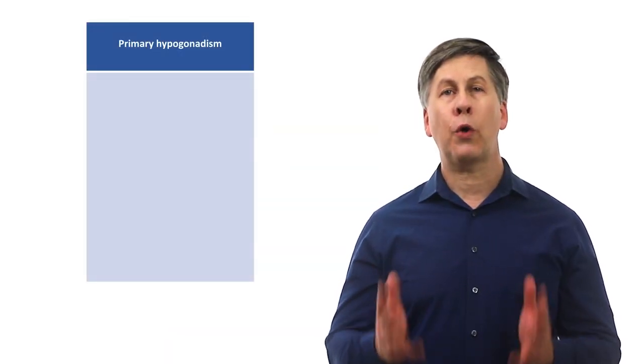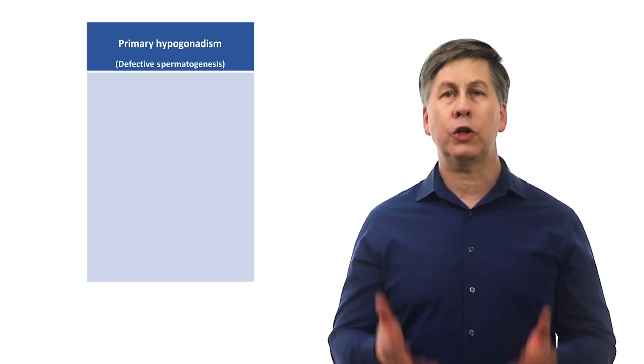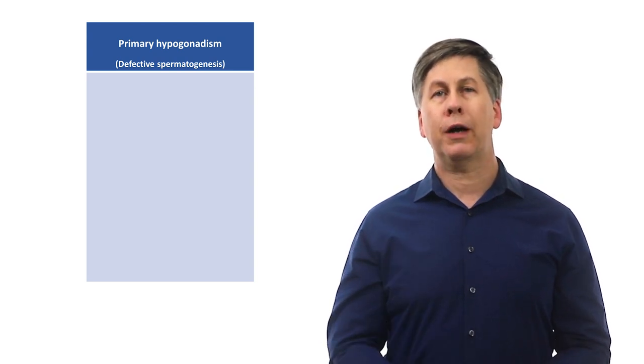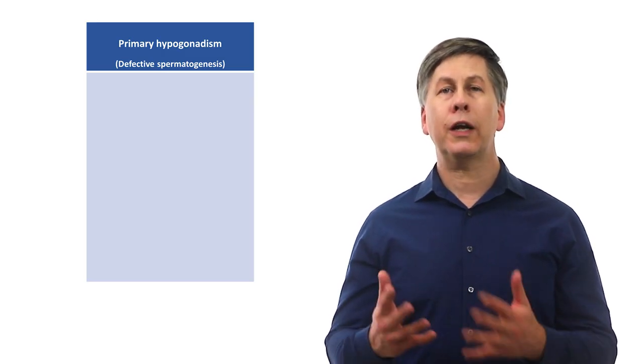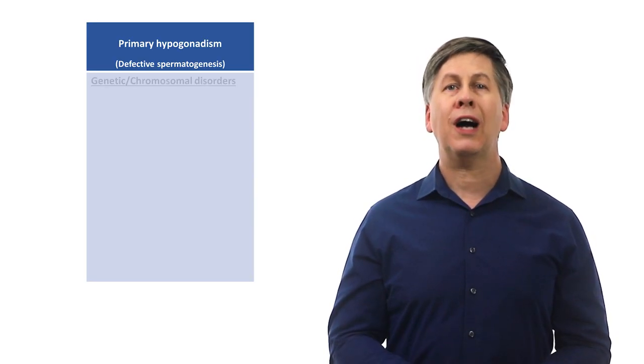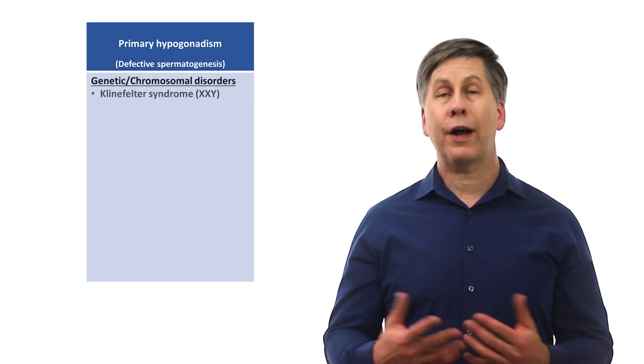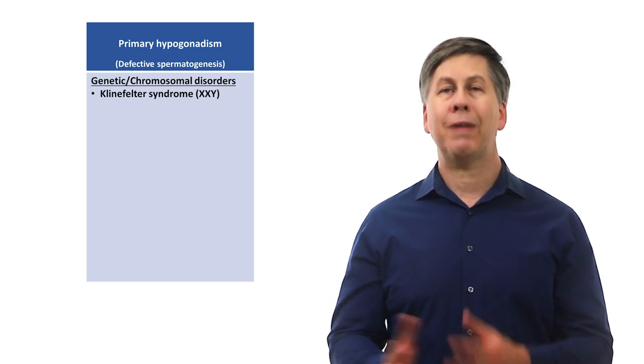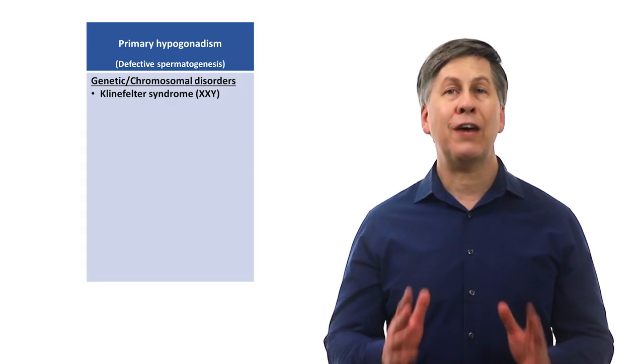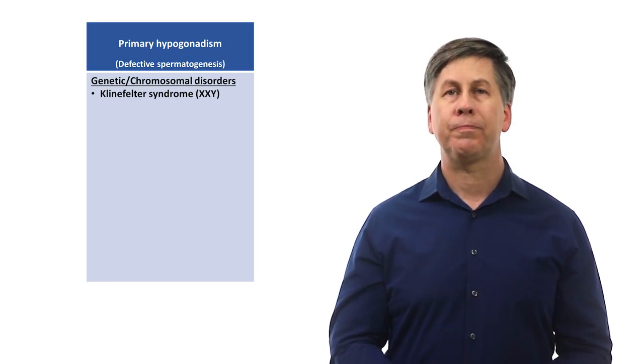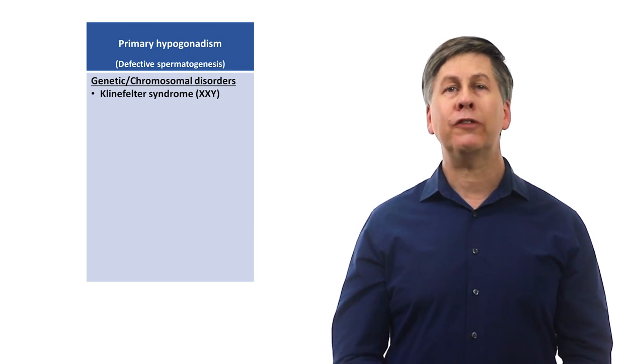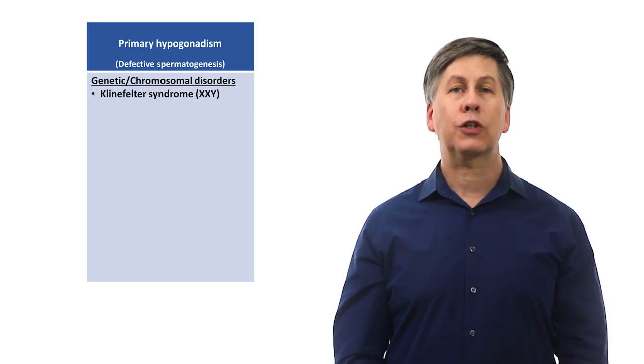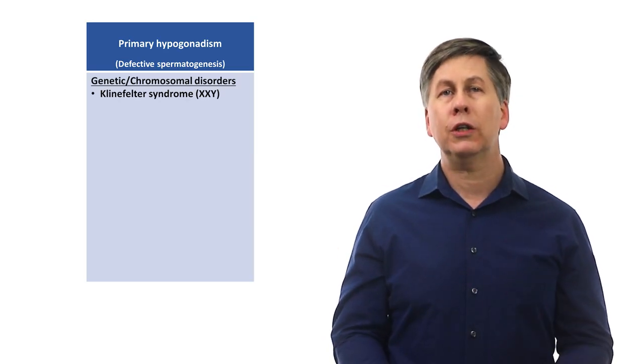First is primary hypogonadism, which is more or less synonymous with defective spermatogenesis. There is a problem with the testes which prevent the normal production of functioning multispermatozoa. This category can be further broken down into genetic and acquired disorders. The most common genetic cause of primary hypogonadism include Klinefelter syndrome, which is a chromosomal abnormality in which instead of 46 chromosomes, including two sex chromosomes X and Y, the patient actually has 47 chromosomes with an extra X sex chromosome.